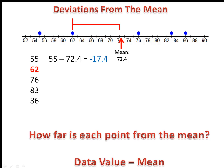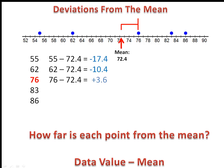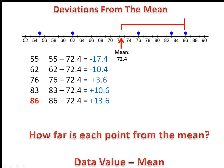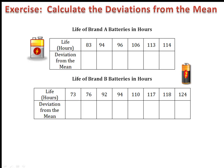We then move on to point 62. 62 minus 72.4, the mean, tells us that point is 10.4 units less than the mean. Now we move up to 76, which is bigger than the mean. 76 minus 72.4 is 3.6, so 76 is 3.6 units above the mean. We can similarly calculate that for 83 and 86. The numbers in blue are the deviations from the mean — they have a practical application we'll learn about in the next video. Let's practice calculating deviations from the mean.